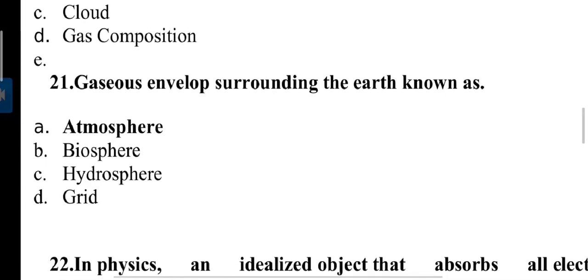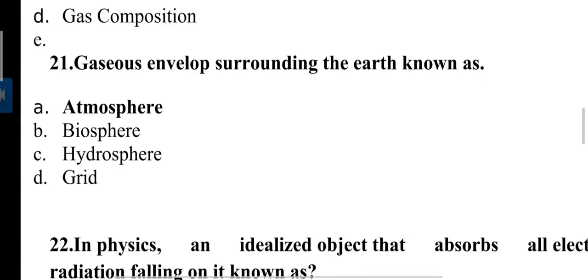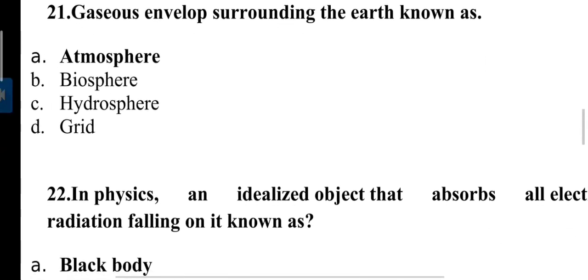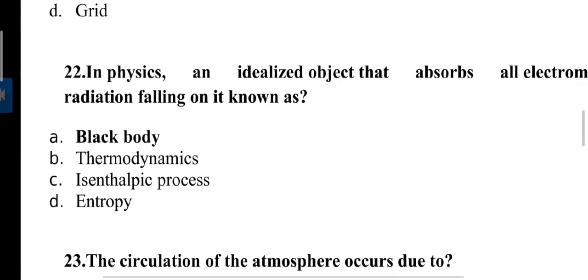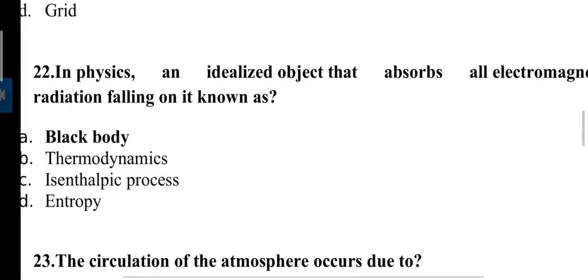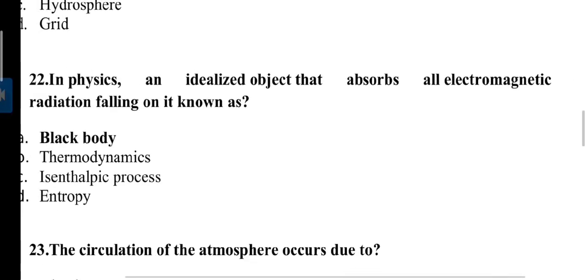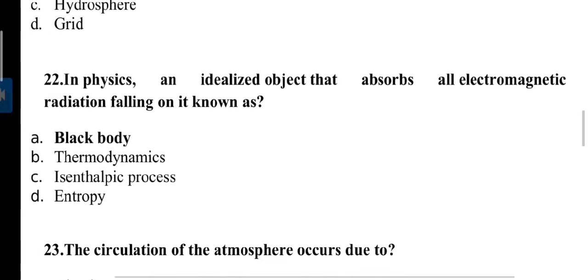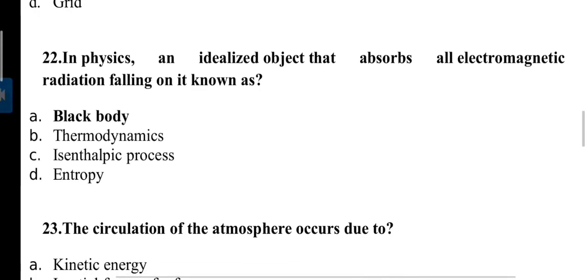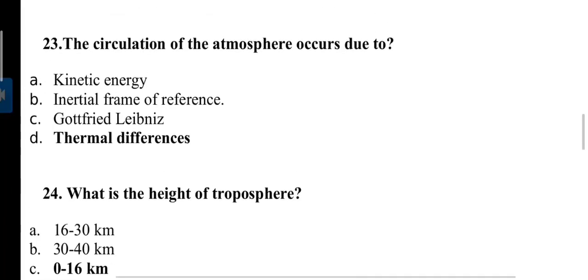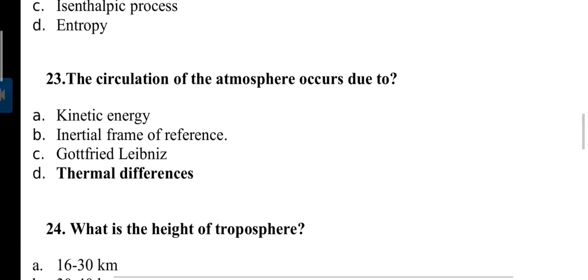Question: Gases envelope surrounding the earth is known as atmosphere. Biosphere is where all living organisms like plants and animals live. Hydrosphere is all the water bodies present in the earth. Next question: In physics, an idealized object that absorbs all electromagnetic radiation falling on it is known as black body. The circulation of the atmosphere occurs due to thermal differences.